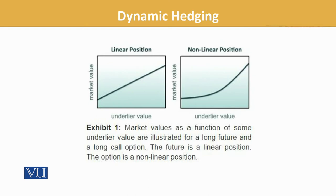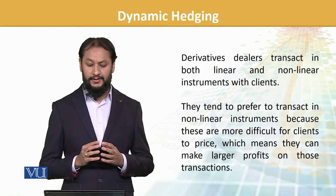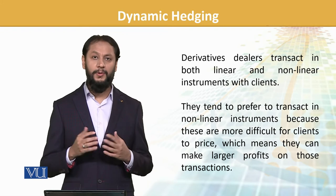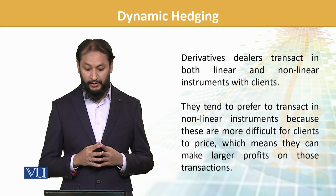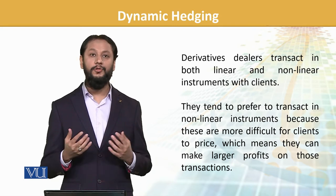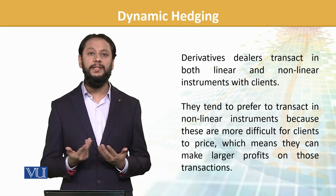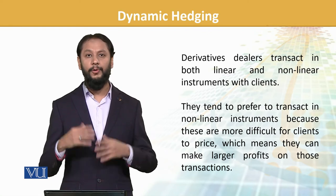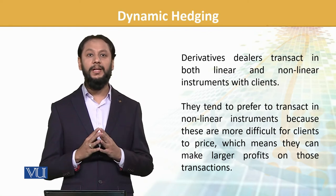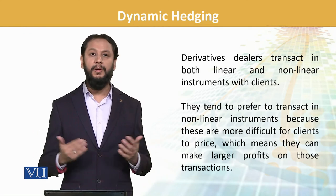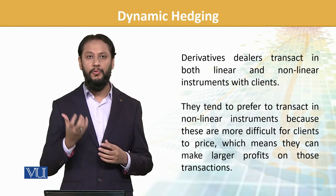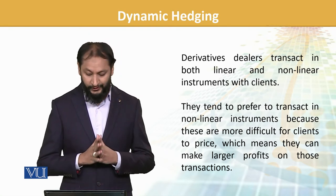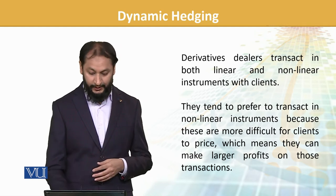That derivative movement could be any direction. Derivative dealers transact in both linear and non-linear instruments, but they tend to prefer transactions in non-linear instruments because they are more difficult for clients to price. Linear ki pricing simple hai — har banda price kar sakta hai — to abnormal profits wala mamla us mein nahi hota. Non-linear mein uncertain path hota hai, so players chahte hain non-linear, as they can make more money out of it and larger profits can come from such transactions.